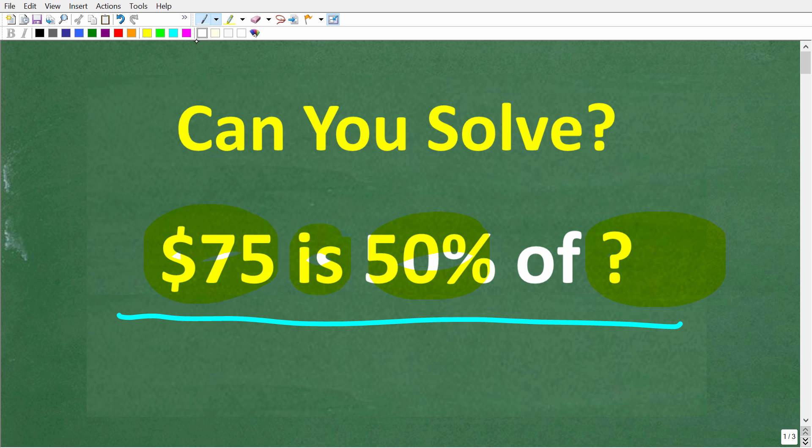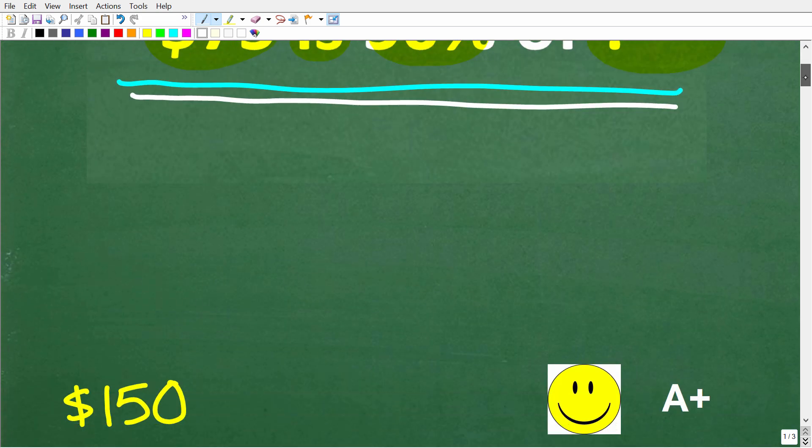I'm going to fully explain how to solve this problem. Also, this is a very special video because I'm going to make a very important announcement for those of you that really like my instruction. One more time, we have $75 is 50% of what value? Let's go ahead and see the answer.